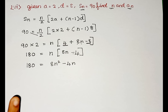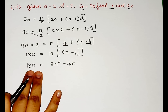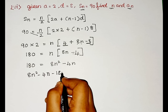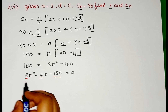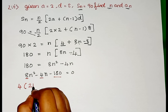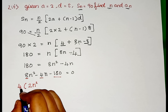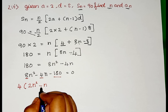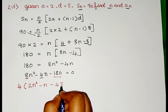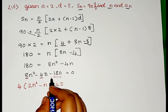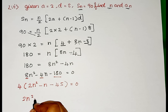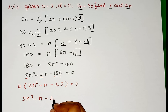So 180 is equal to N into 8N, which is 8N squared, and N into minus 4 is minus 4N. When we get 180 to this side, it changes into minus 180, and is equal to 0. So we have 8N squared minus 4N minus 180 equals 0. Here 4 is common, so taking 4 as common: 4 into bracket 2N squared minus N minus 45 is equal to 0. So we get 2N squared minus N minus 45 equals 0.